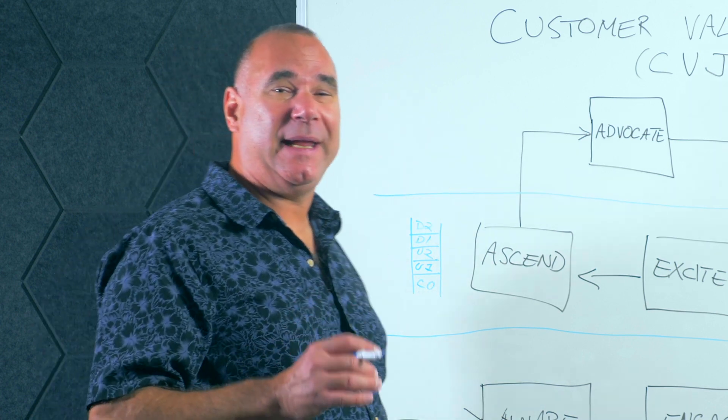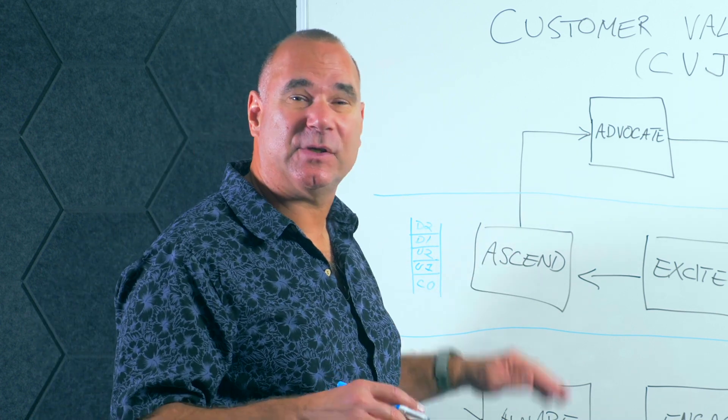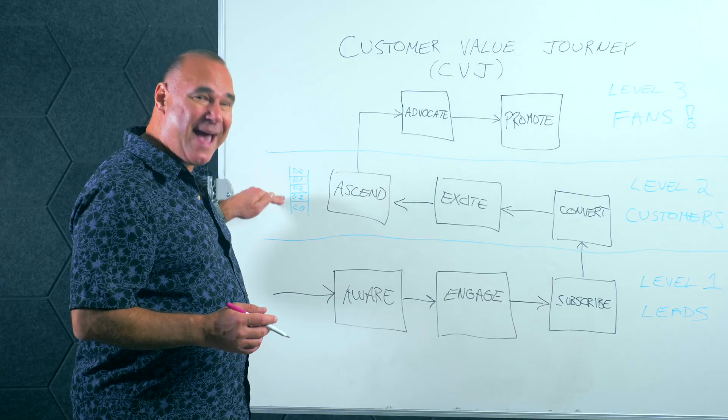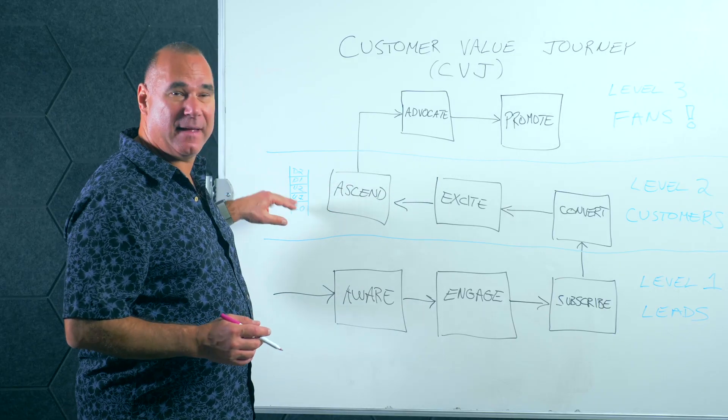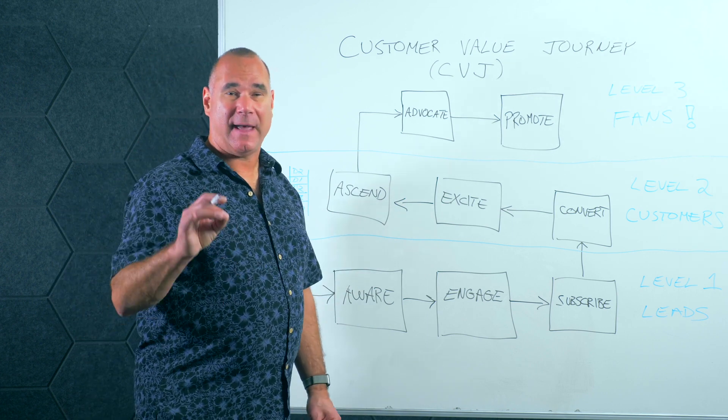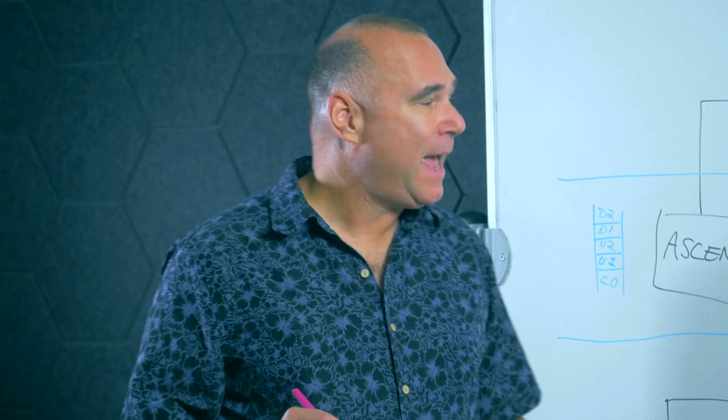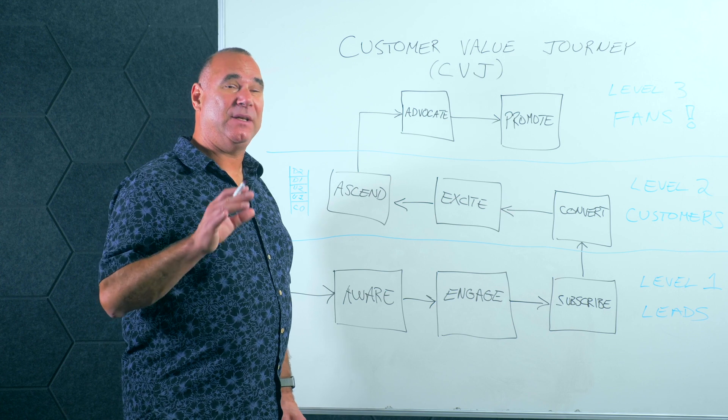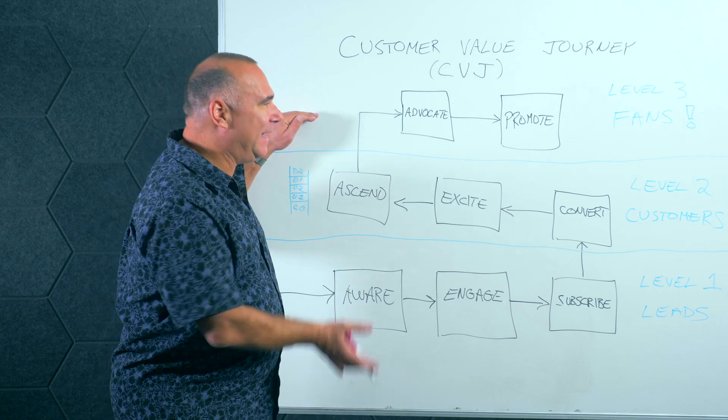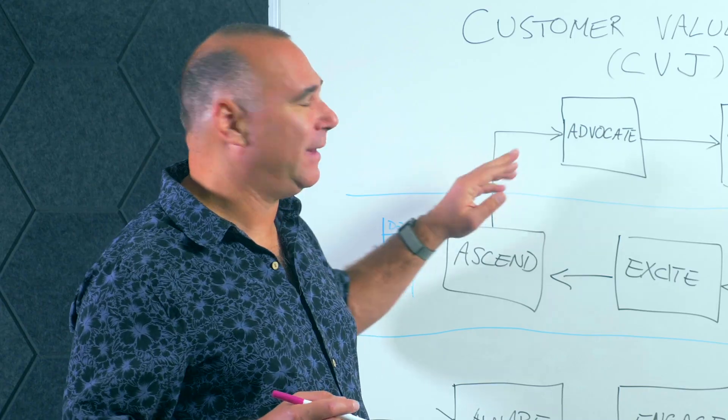Level 3 is all about turning your customers into raving fans. At Level 2, once you have a customer and you ascend them through all your upsells, downsells, and wonderful value that you add to their world, how do you make those customers into fans? That can actually be engineered, and we do that at Level 3, the top level where you should be striving to get all your customers.